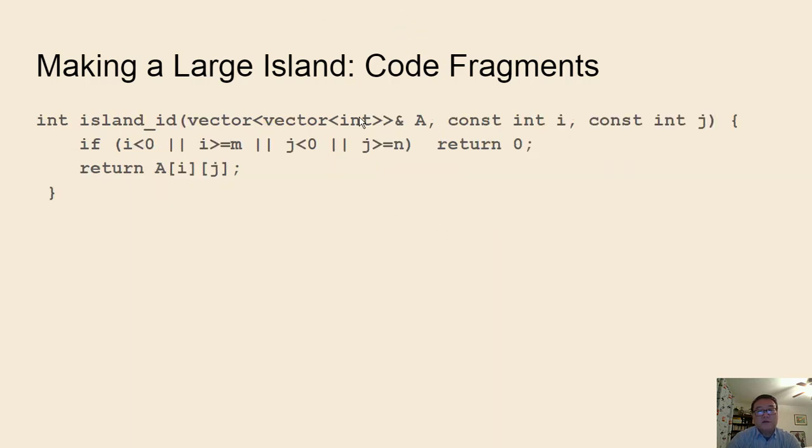The island ID code is checking to make sure it's inside the boundary. If it's not in the boundary, we return zero. Otherwise we return the value that we changed using flood fill.